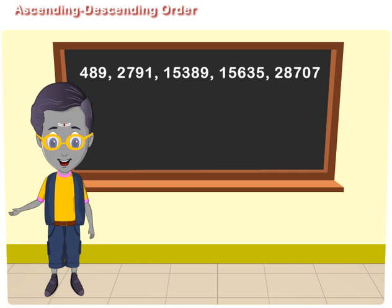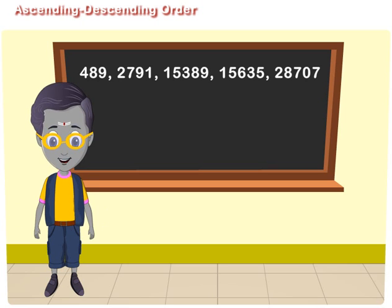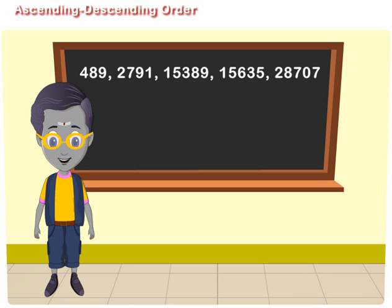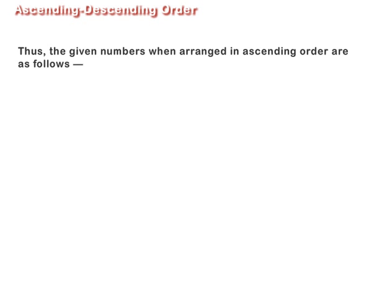You will find that 15,635 is greater than 15,389, and 28,707 is greater than 15,635. Thus the given numbers when arranged in ascending order are as follows: 489, 2,791, 15,389,